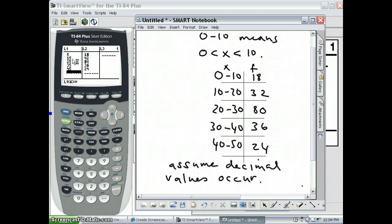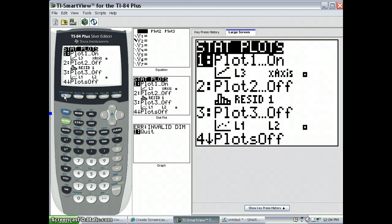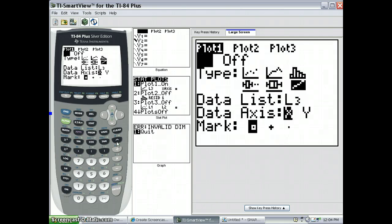Now let's make the histogram. So what we're going to do is very simply press 2nd, y equals to bring up stat plot. We're going to choose a histogram by choosing the histogram icon under type.